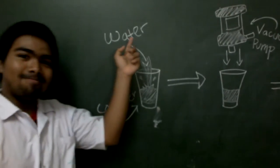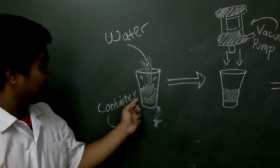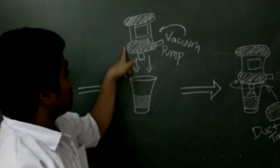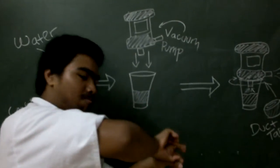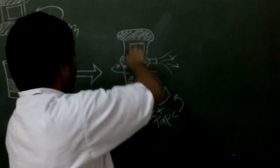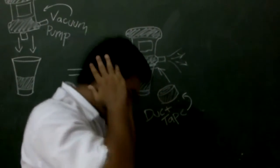Here is how it works. First, pour the water into the container. Then, seal it with duct tape. And then, put on the vacuum pump. After that, seal it again with duct tape and turn on the vacuum pump.